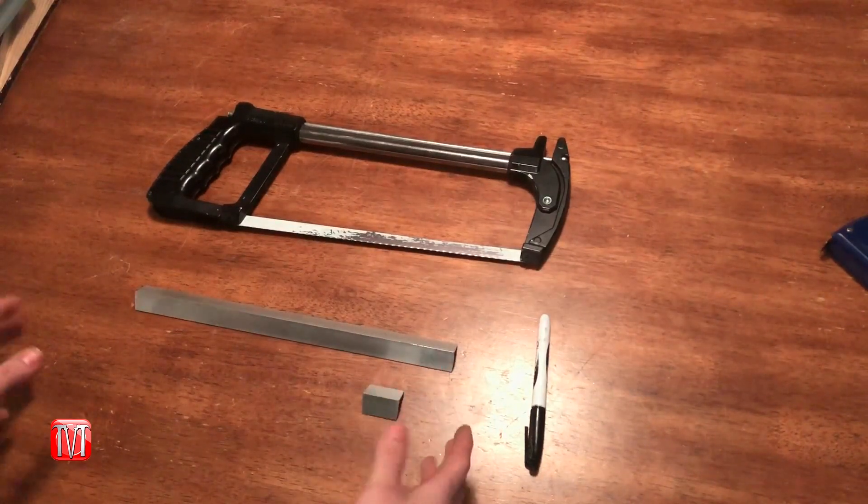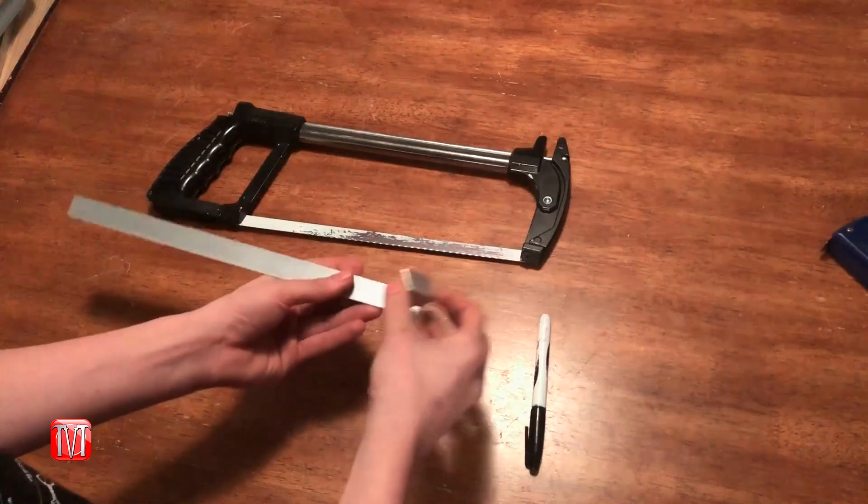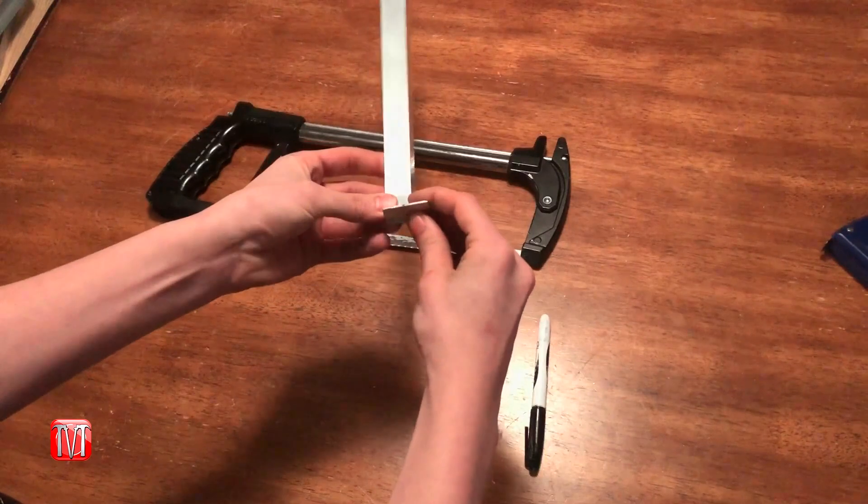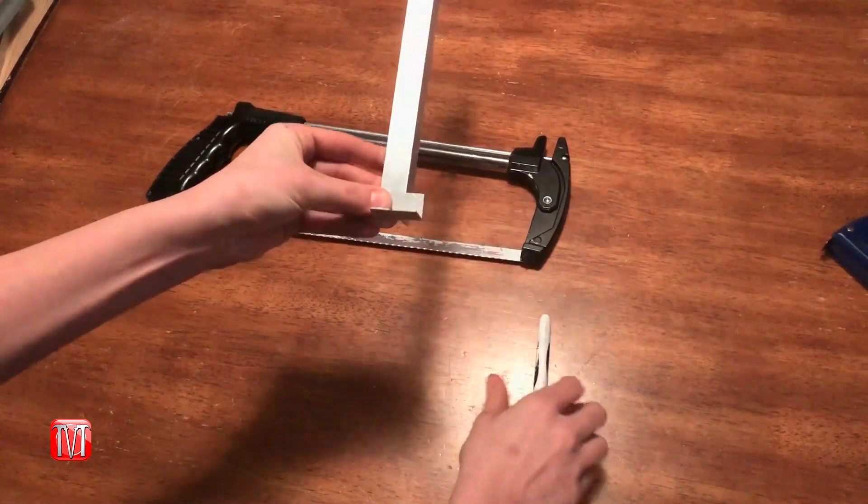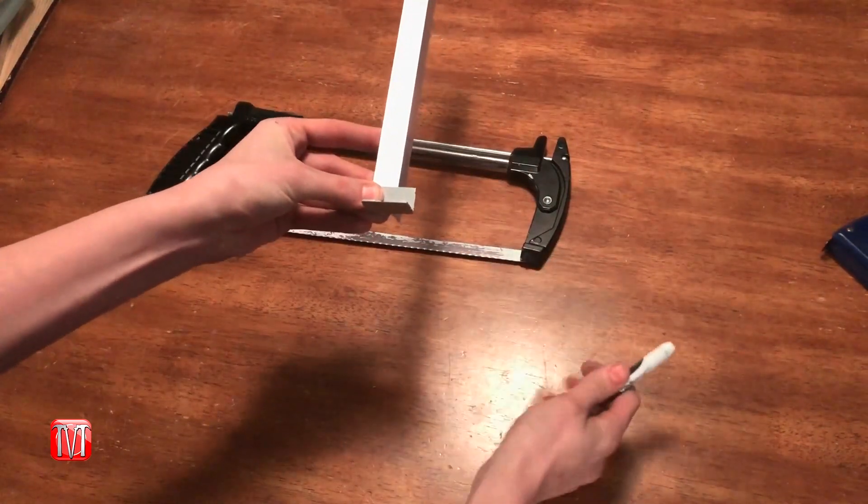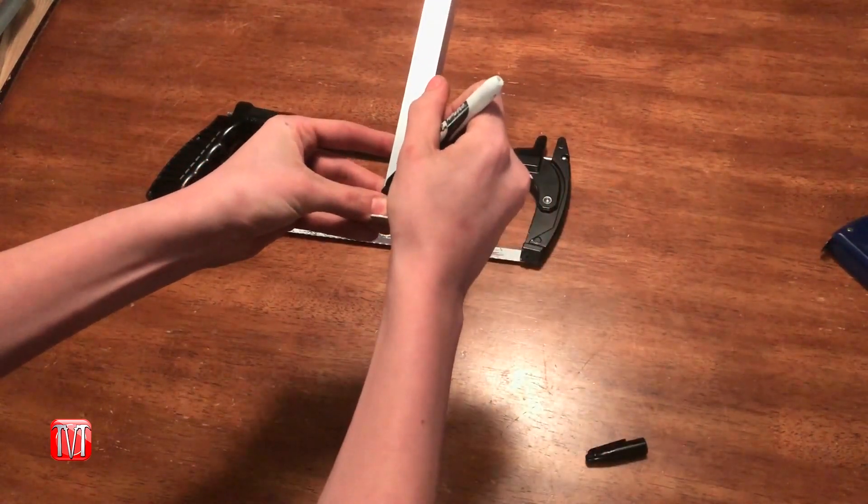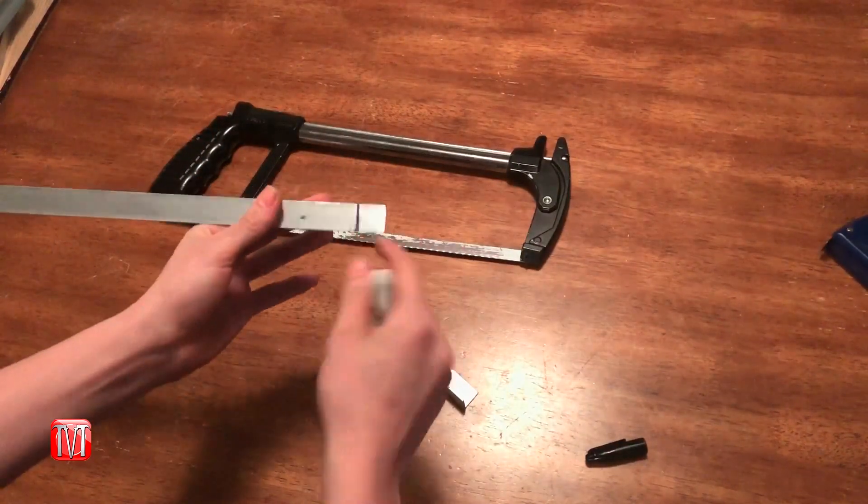Now that we got the piece cut to the length that we need, you're going to take a scrap piece of the same material or something of the same width. Line up the edges like so. Once you have the edges lined up, take your marker and mark this edge.